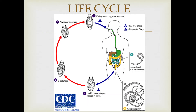The life cycle of Trichuris trichiura is as such. First, the unembryonated eggs are passed with the feces, and in the soil the eggs then develop into what is known as a two-cell stage, followed by an advanced cleavage stage, and then they embryonate. This means that they actually become infective, and this occurs typically in 15 to 30 days.